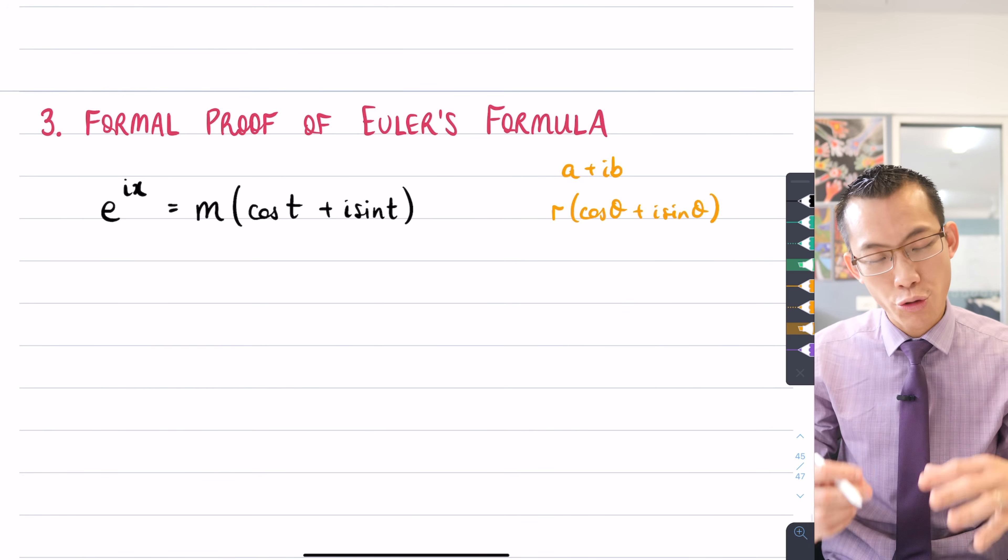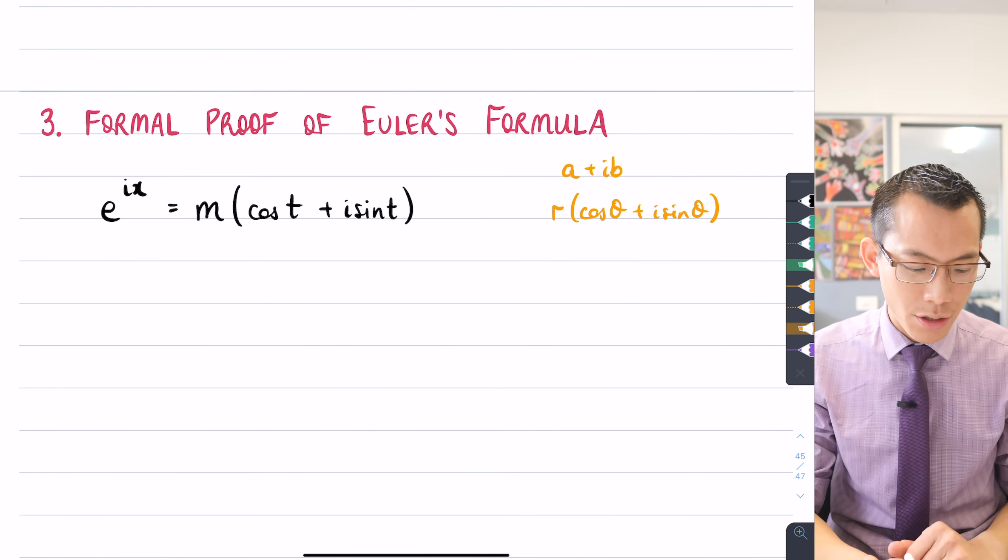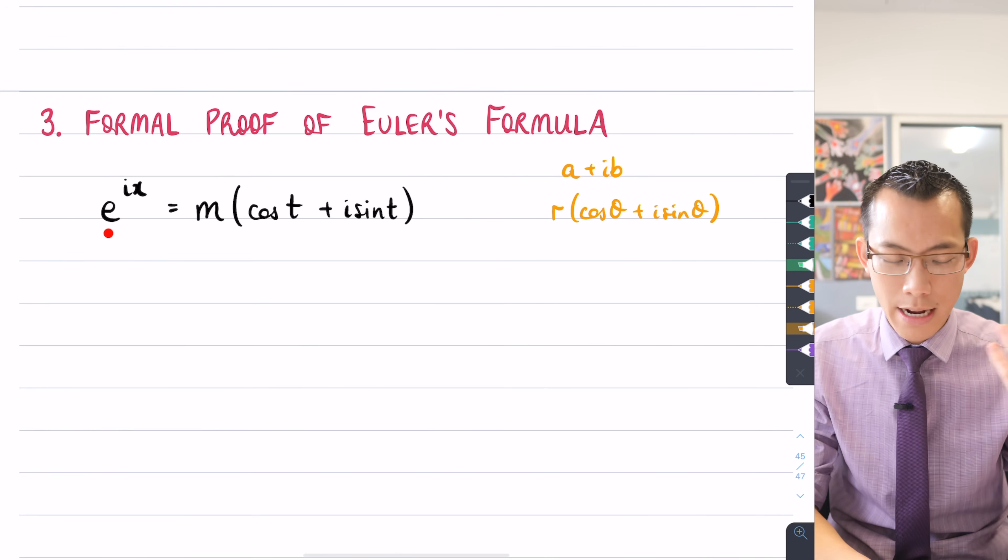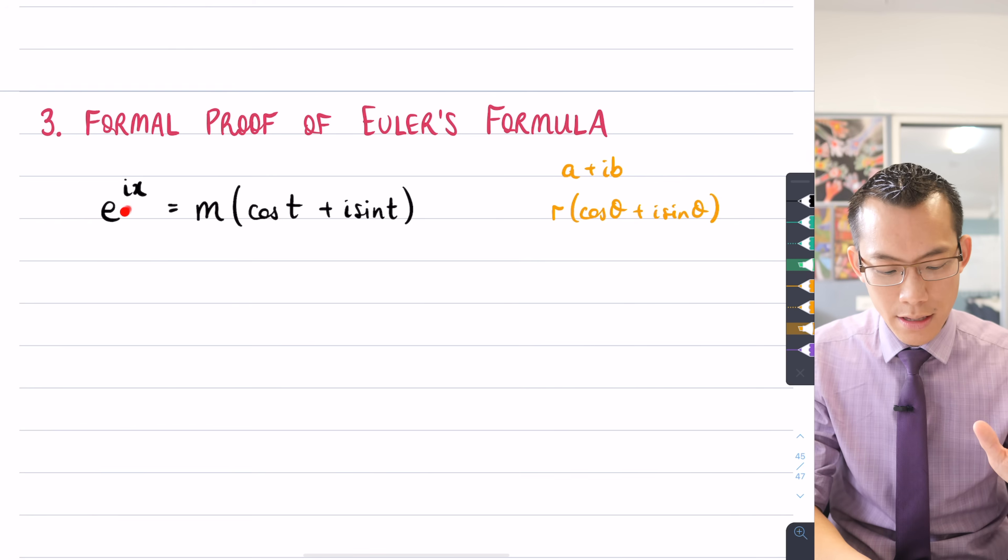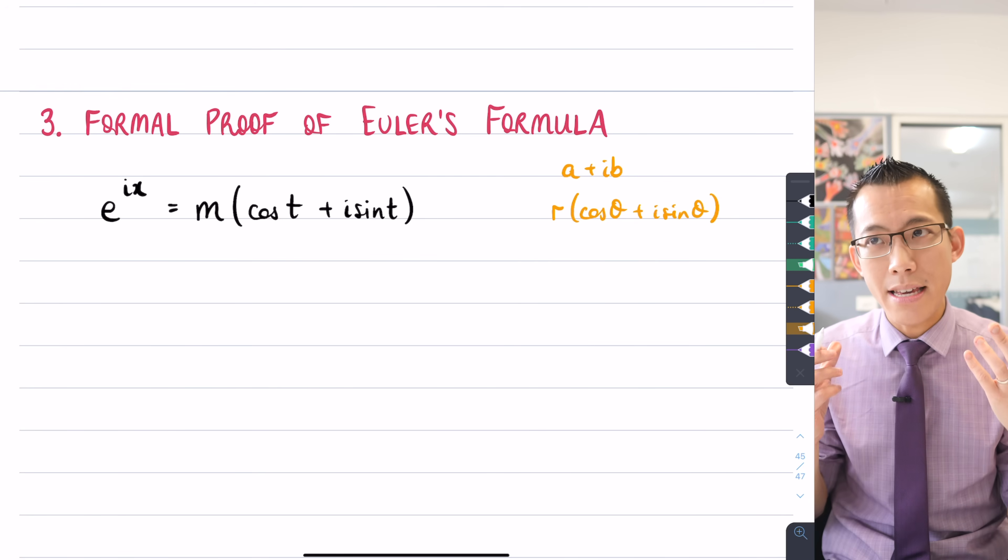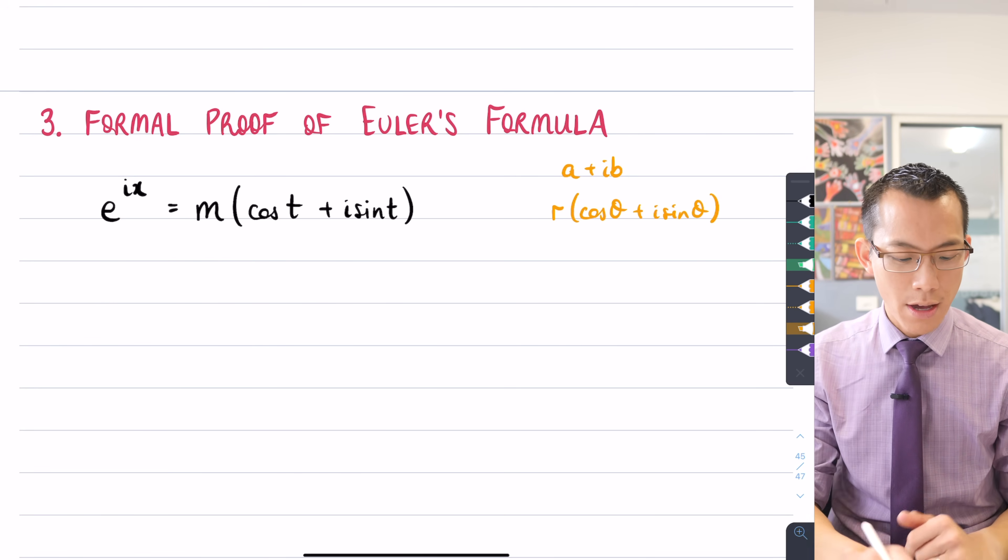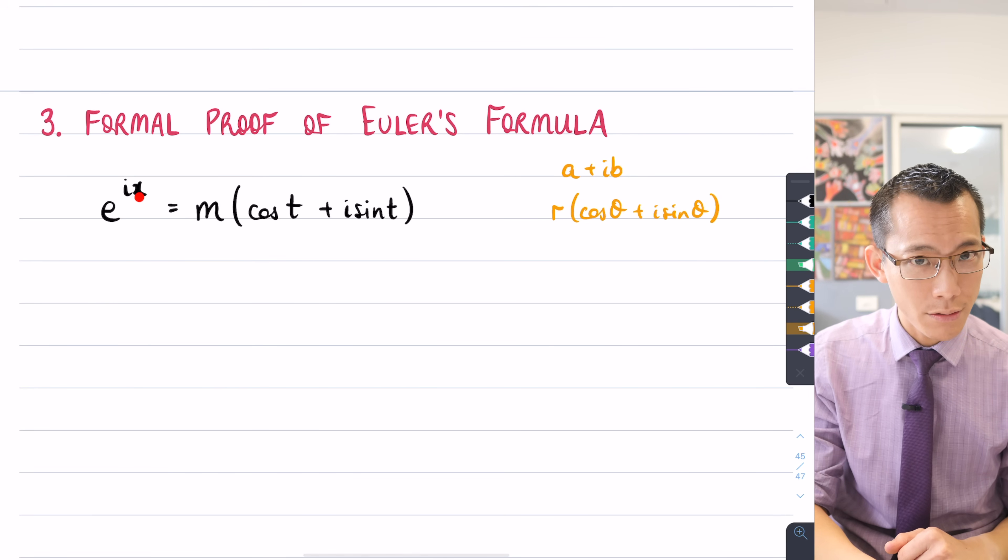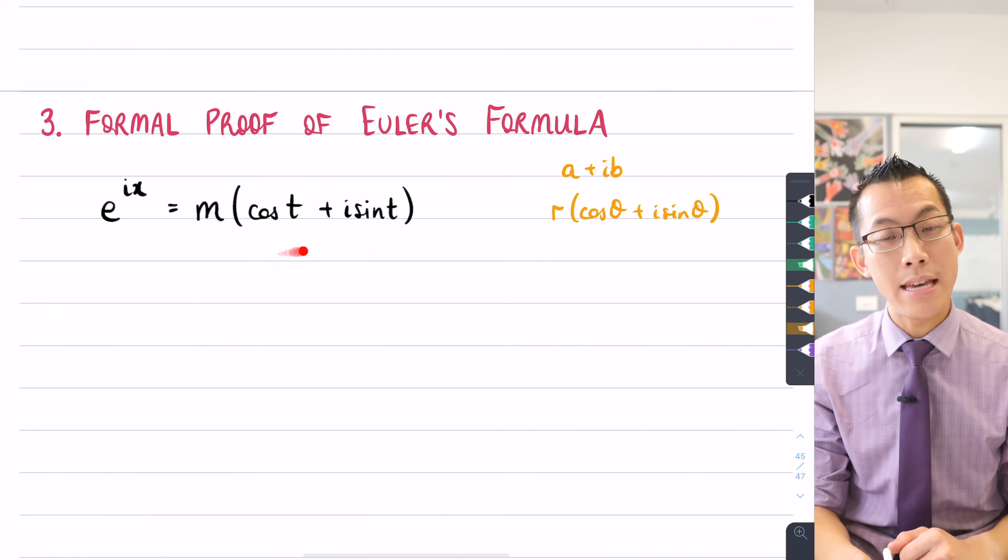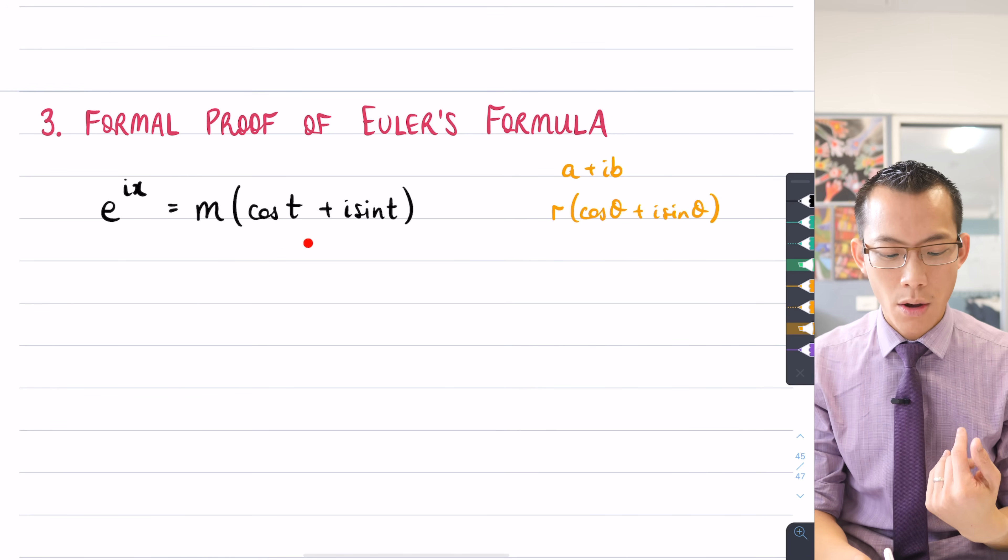Now, the only catch is, the thing that's tricky about this, is that e is a number 2.718, i is a number, the square root of negative 1, these guys are well-defined, but x is a variable. I'm going to treat x as something that can change value. Now, if this thing can change value, that means the complex number you get at the end can also change value.